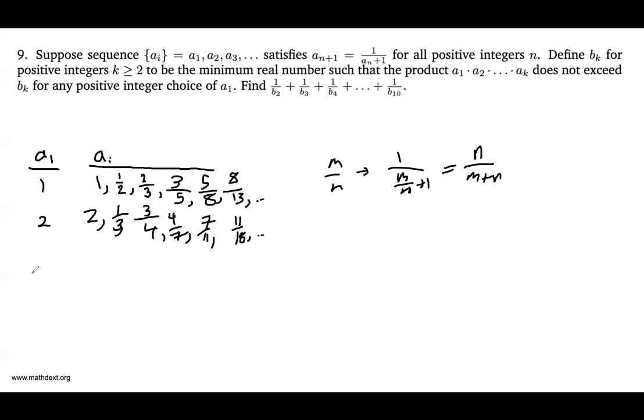If a sub 1 is equal to 3, you get something like 3, 1 quarter, 4 over 5, 5 over 9, 9 over 14, 14 over 23, dot dot dot. And you can kind of see the pattern that would follow from choosing a sub 1 as anything - we follow this pattern, m over n goes to n over m plus n.